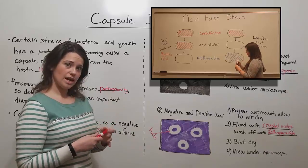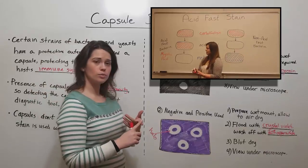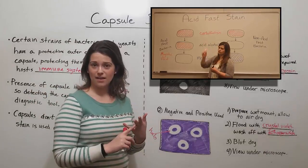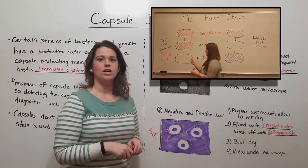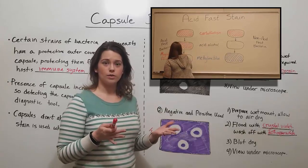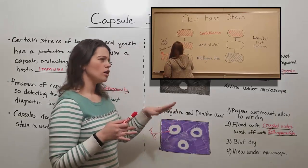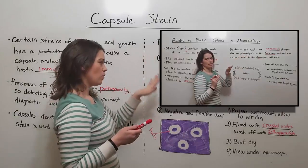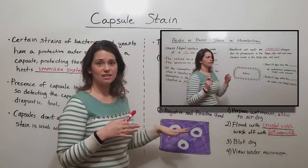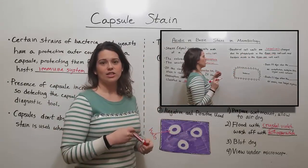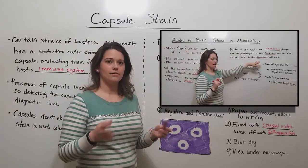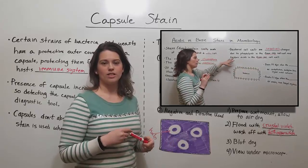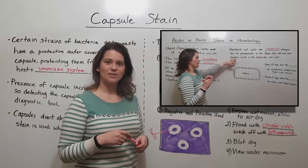If you want to learn about more stains — for example, the endospore stain, the gram stain, or the acid-fast stain — you can see my videos on any of those. If you want to know more about what makes a stain a negative stain versus a positive stain, check out my video on acidic versus basic stains in microbiology. Thanks for watching Biology Professor.